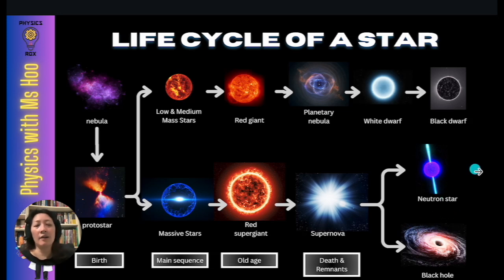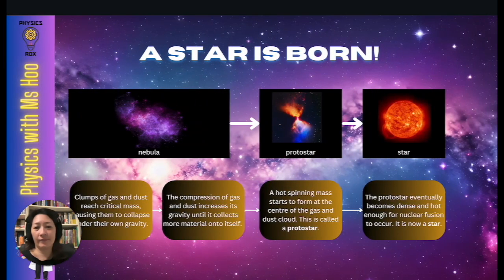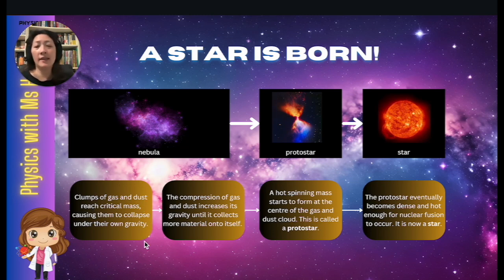Let's start first with the birth of the star. When a star is born, it's born in a nebula. What happens in a star-forming nebula is that clumps of gas and dust reach critical mass, causing them to collapse under their own gravity.